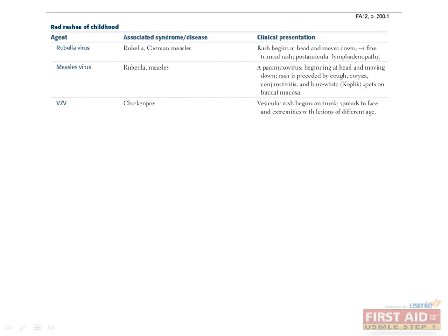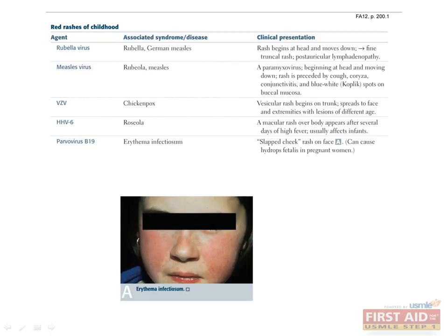VZV causes chickenpox, in which the rash will usually begin on the trunk and spread to the face and extremities. What's important to keep in mind with chickenpox is that lesions will appear to be of different ages — some lesions will appear to be new, while some appear to be older. HHV-6 can cause roseola, which is a macular rash over the entire body. This usually appears several days after a high fever and usually affects infants. Parvovirus B19 can cause erythema infectiosum, also called slap cheek disease, due to the red rash seen on the cheeks of patients.